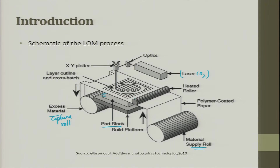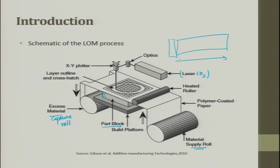After finishing one layer, it must stick to the next layer. For this, a heated roller is used. The heated roller smears over the surface, and wherever there is polymer laminate the temperature rises, making the material semi-solid or viscous, which is used to glue with the next layer coming. The roller reciprocates, the material becomes sticky, and when the next layer comes it just sticks on top — forming the other layer. This is why we use a heated roller, and the entire process is called Laminated Object Manufacturing.